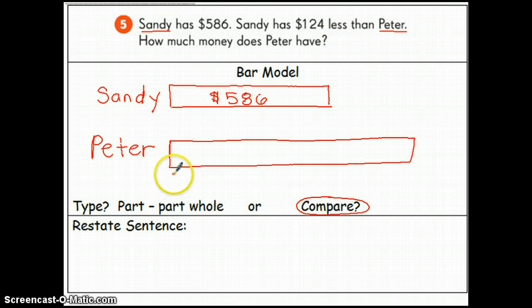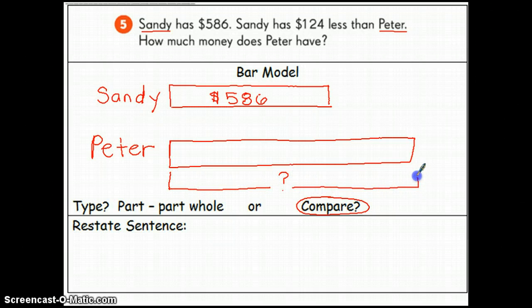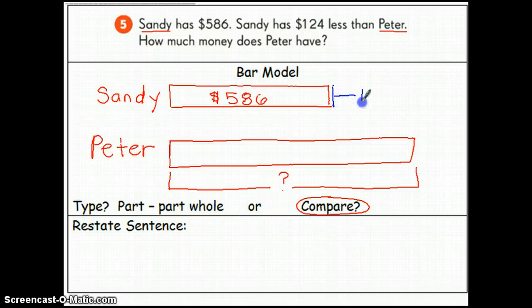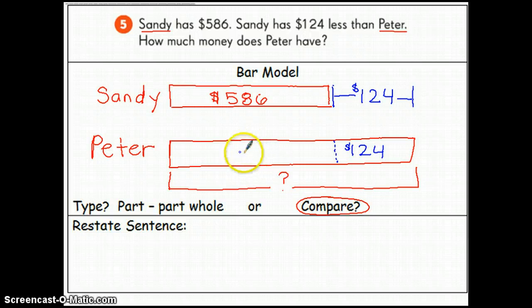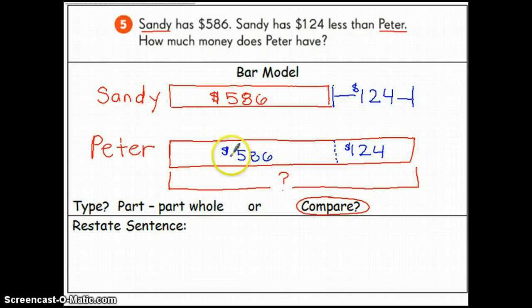And I currently don't know how much Peter has, so my bracket is going to go down here. I do know how much more Peter has. He has $124 more, so I'm going to plug that in over here. And what I like to do, I like to draw a dotted line here to split the bar up. So, I have $124 here, and I'm going to plug this number in down here, which is $586. And then I can visually see what two numbers I need to add to get Peter's amount.